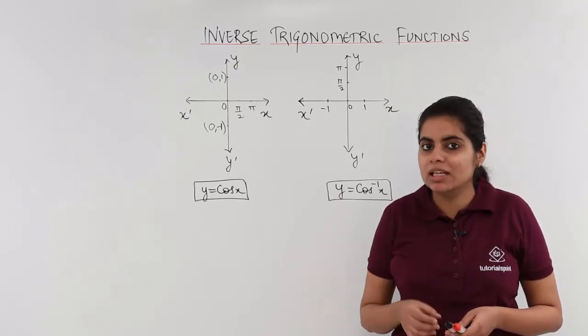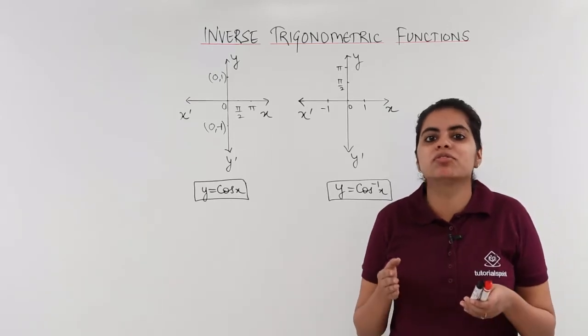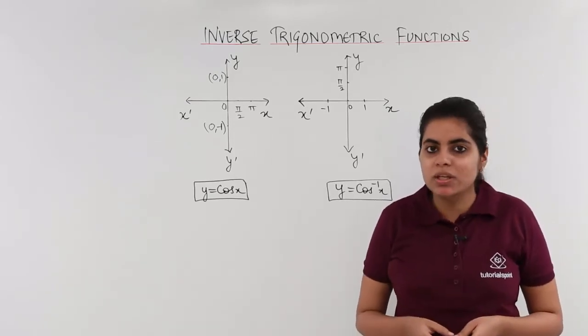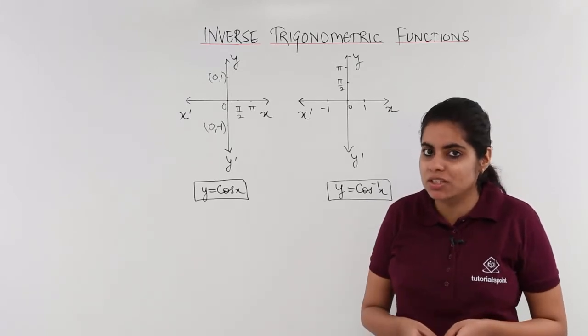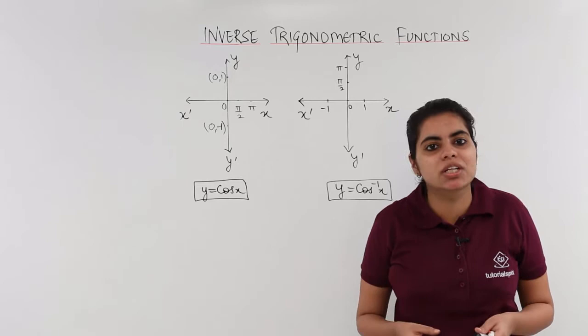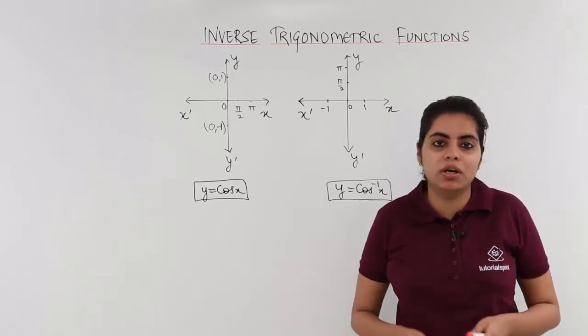A reminder that the graph of a trigonometric function will be possible for inverse if and only if the function is one-to-one onto, that means it is bijective. And a function is bijective only when we restrict the domain of a periodic function.